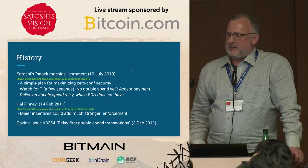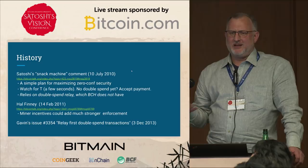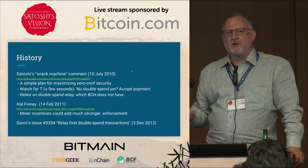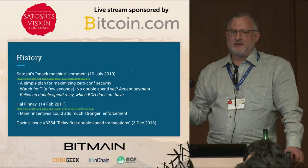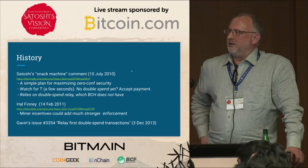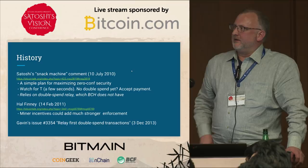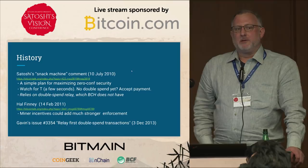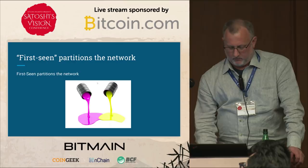Satoshi's plan was: when you receive money from someone, watch the network for a few seconds to make sure it's not double spent. After a few seconds, if a double spend comes in, everyone will likely agree it was not the first one. One problem with his suggestion is that it relies on double spend relay, which doesn't exist on Bitcoin Core or Bitcoin Cash. Hal Finney also went further in a post about a year later, talking about miner incentives to avoid mining an obvious double spend.